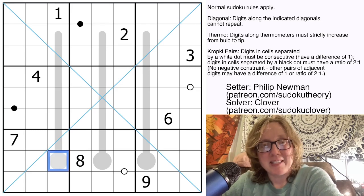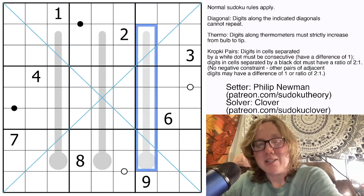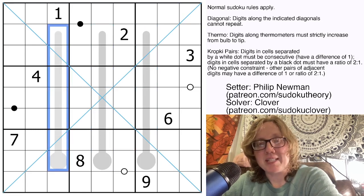On top of that, we have thermos. Those are these shapes. And along each of these long thermometer shapes, the digits have to increase, starting at the round bulb and going upwards towards the tip.